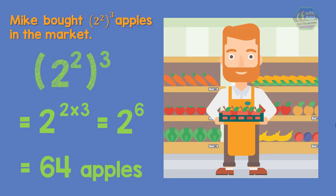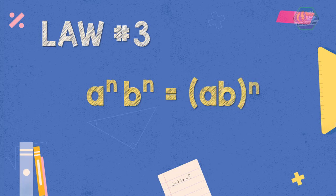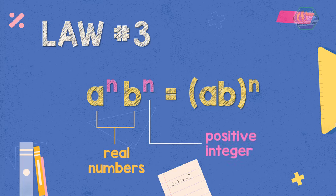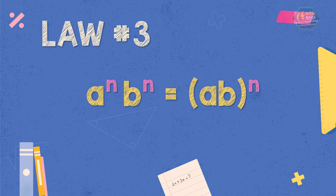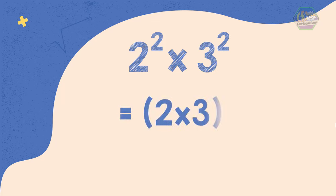Now let's proceed to Law 3. A raised to the power of n times B raised to the power of n is equal to A times B raised to the power of n, where A and B are real numbers and n is a positive integer. This law means that if you have different bases but identical exponents, you can just multiply the bases and then copy the exponent. For example, 2 raised to the power of 2 multiplied by 3 raised to the power of 2 is equal to 2 times 3 raised to the power of 2. Therefore, the equation will become 6 raised to the power of 2, which means 6 will be multiplied 2 times. So the answer is 36.